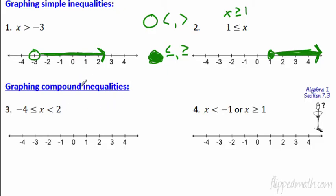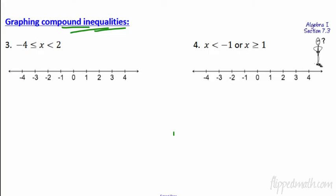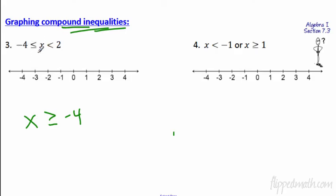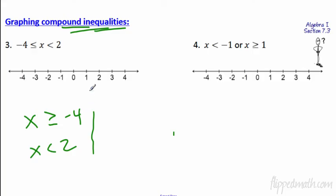Graphing compound inequalities. These are compound — like compound words. You have two inequalities put together as one. The first inequality: X is greater than or equal to negative 4. The next inequality: X is less than 2. You graph both at the same time. Fill in the circle at negative 4 because it's 'or equal to'; open circle at 2 because it's strict less than. Shade everything in the middle.